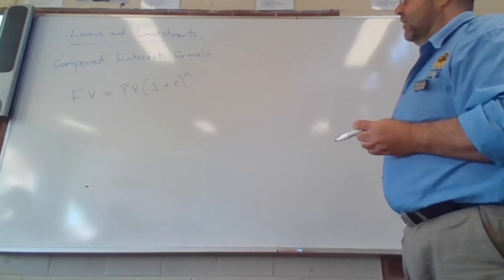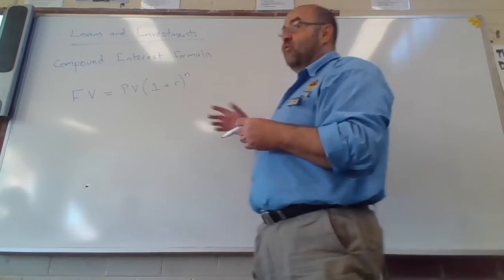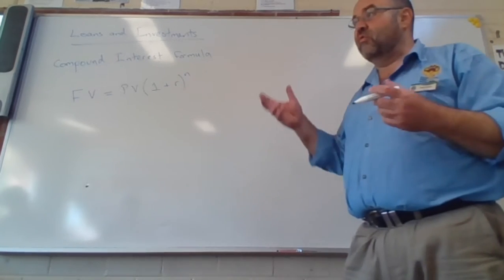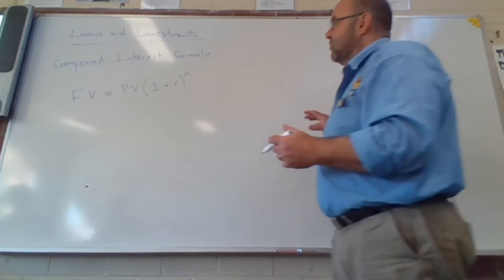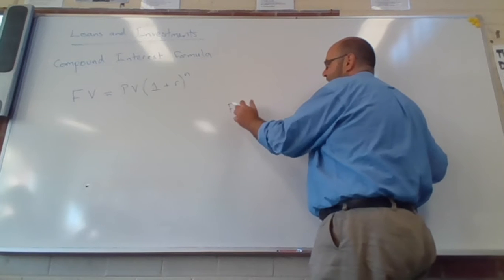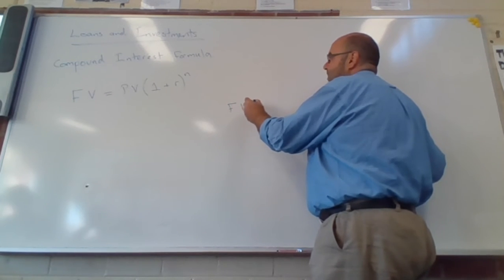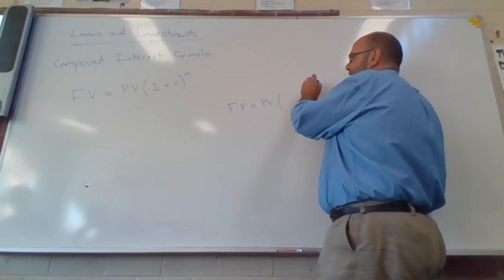Actually, let me give another version of that. Another version says it's the exact same formula rearranged. So if you think about what this formula is saying, it's got a term. Don't write this part down. Just have a look at it. Future value equals the present value times this bracket here.